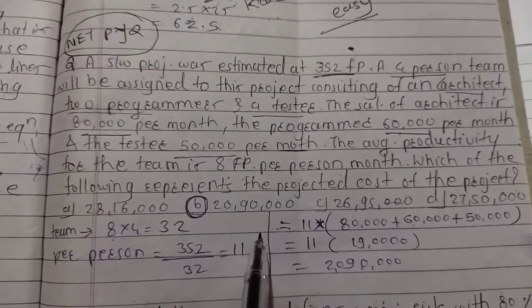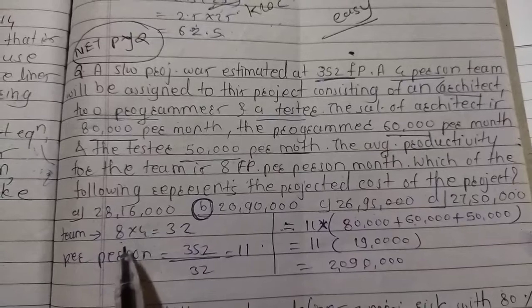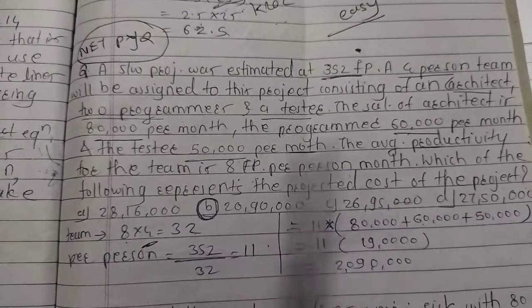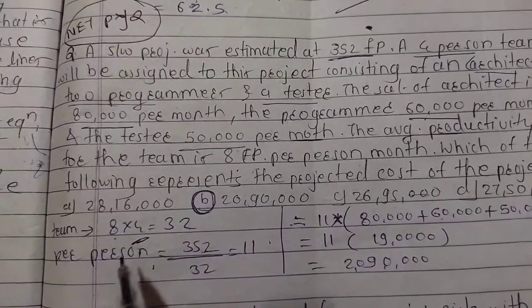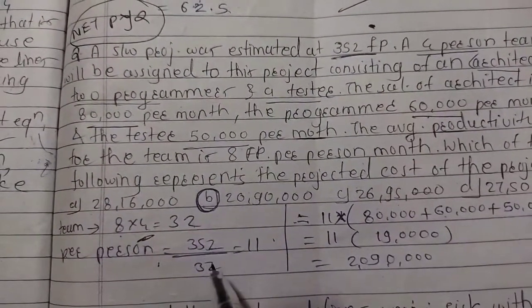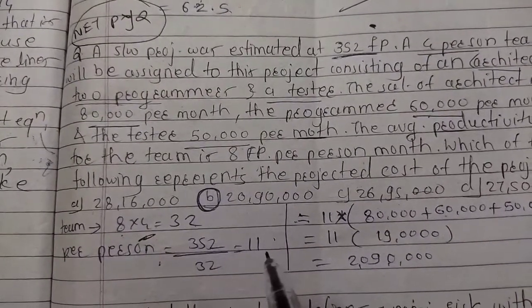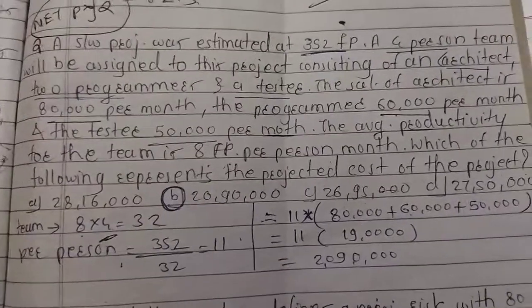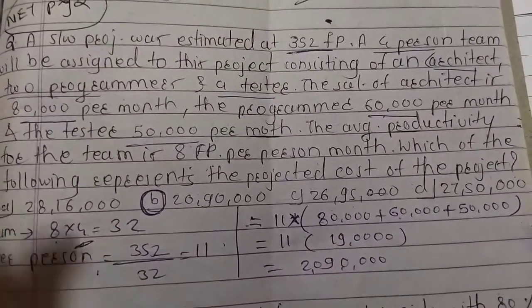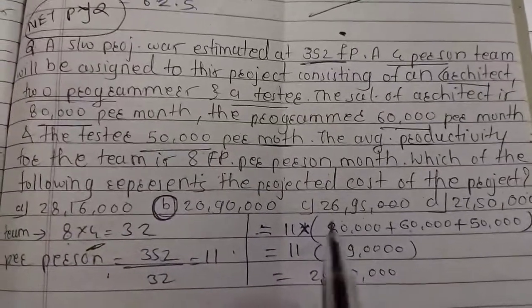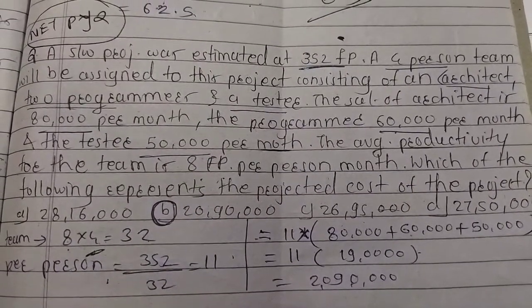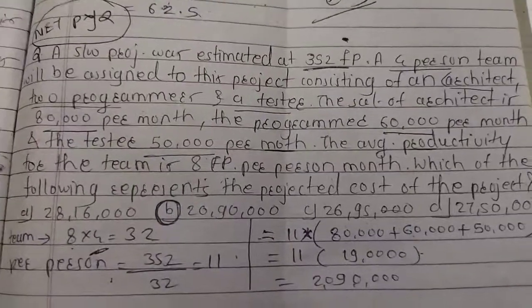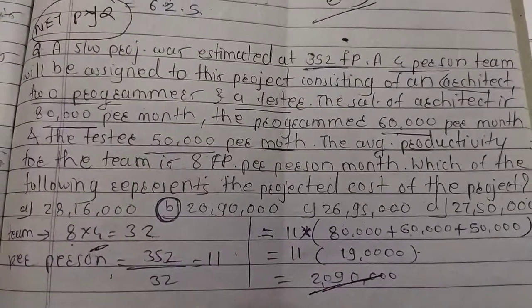With four persons in the team and average team productivity of 8 function points, team productivity = 8 × 4 = 32. Per person productivity = total function points ÷ team productivity = 352 ÷ 32 = 11. Now total cost = 11 × (sum of salaries of team members) = 11 × (80,000 + 60,000 + 50,000) = 11 × 190,000. This gives the total cost required for the project. Thank you.